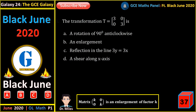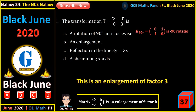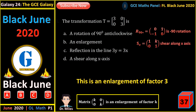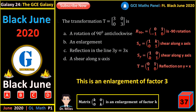The transformation T equals the matrix (3, 0; 0, 3) — a transformation of the form (k, 0; 0, k) is always an enlargement of factor k. A 90-degree anticlockwise rotation is represented by (0, 1; -1, 0). A shear along the x-axis is represented by (1, k; 0, 1). Along y: (1, 0; k, 1). A reflection on the line x equals y is (0, 1; 1, 0). Note that the line 3y equals 3x is the same as y equals x.